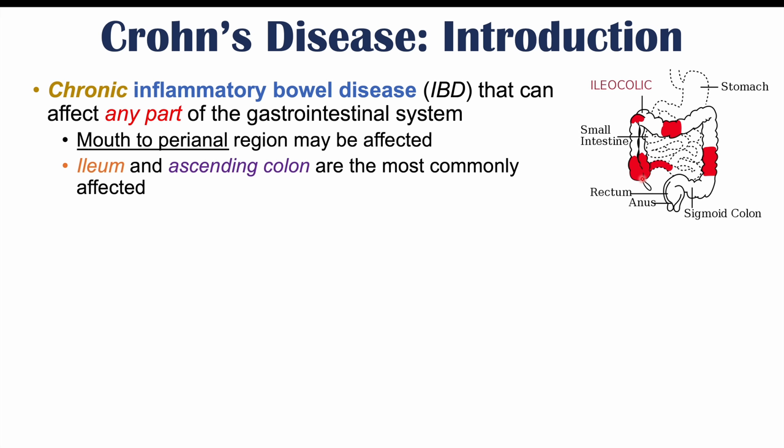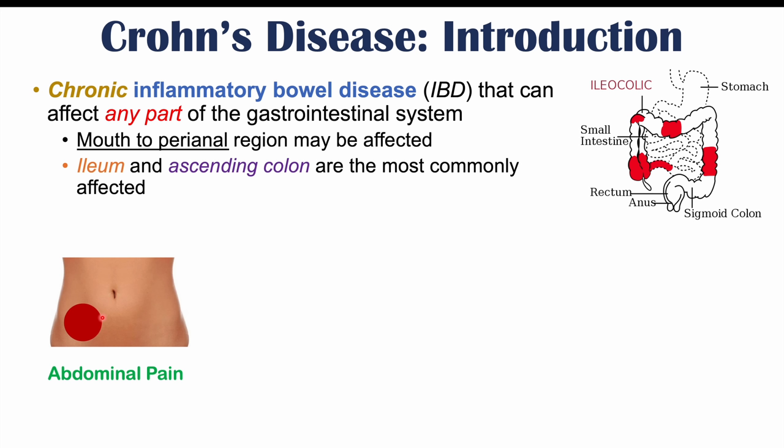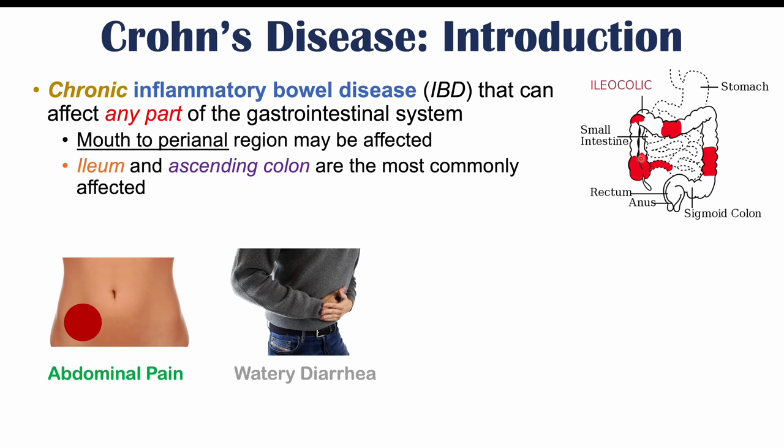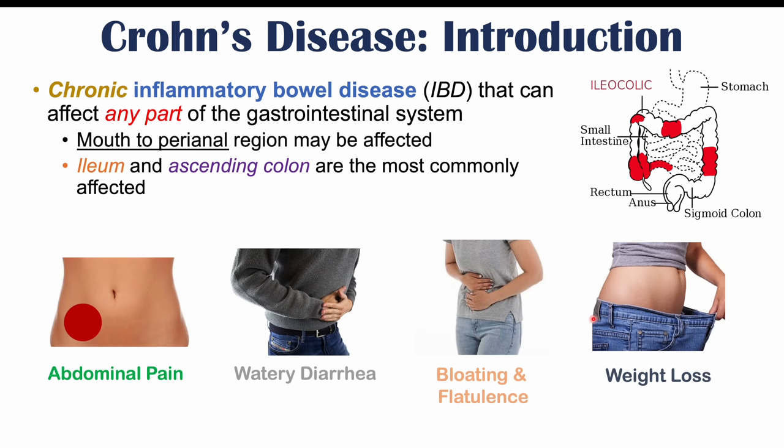Crohn's disease comes with classic gastrointestinal findings. These include abdominal pain, which most often affects the right lower quadrant — the right side and lower portion when looking at the patient straight on. We can also see watery diarrhea, bloating and flatulence, and weight loss, because the inflammation in the gastrointestinal system prevents proper absorption of nutrients.